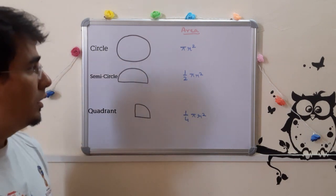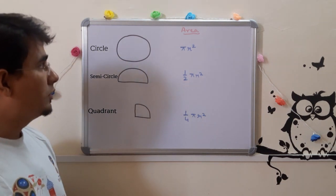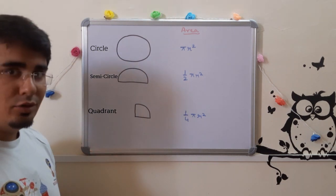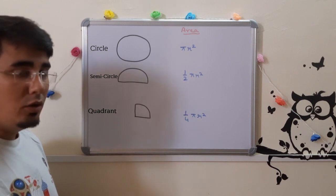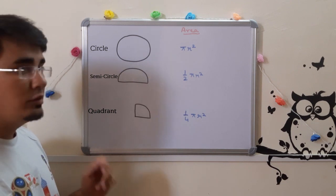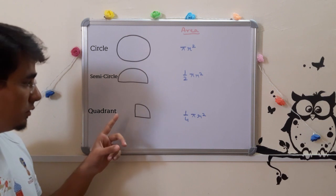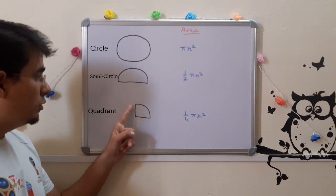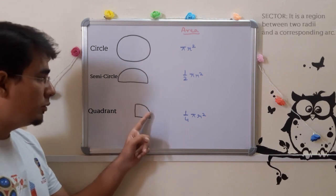Now if I ask you to check whether these are sectors or not, just recall what we learned just now. What is a sector? A sector is the region between two radii and a corresponding arc.